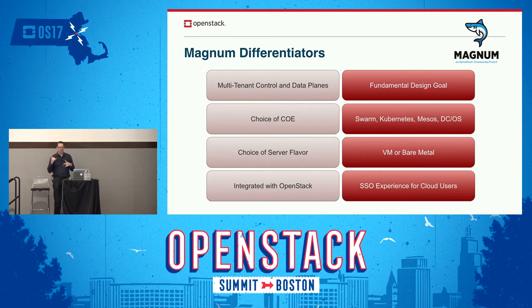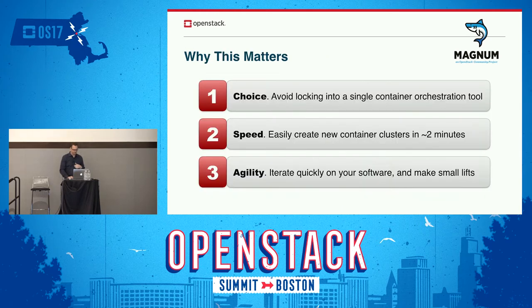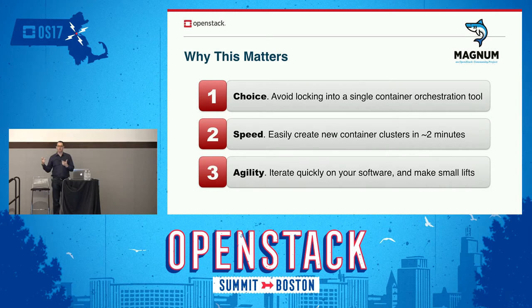The fourth difference is that it's integrated with OpenStack. If you've already got cloud users creating compute instances and storage, they can use the same cloud identities to create container clusters in addition to what they already do. This matters because it offers users a choice of container orchestration environment, allows them to iterate more quickly, and allows them to be more agile.